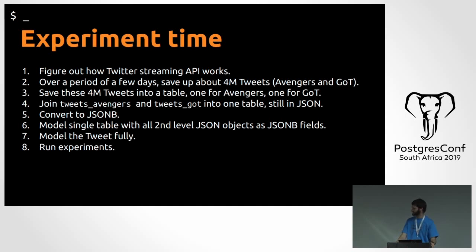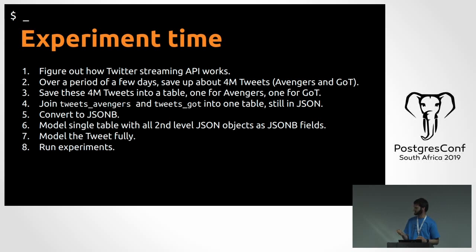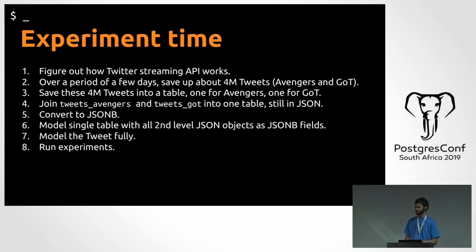So, experiment time. I downloaded 4 million tweets using Avengers and Game of Thrones keywords, saved them into a tweets table, then concatenated them together and converted that into a JSON field. So it was a table with a single column that was just a JSON field. Then I made another table that was a single column JSONB field. Then I took the root keys and turned them into their own columns, and anything deeper like the user or retweet stuff were then JSONB fields. And then I modeled out everything fully into tables — no JSONB anywhere — and then normalized it so duplicate users were removed.